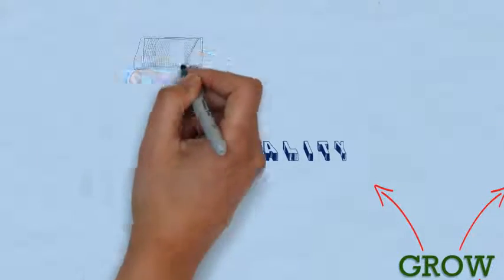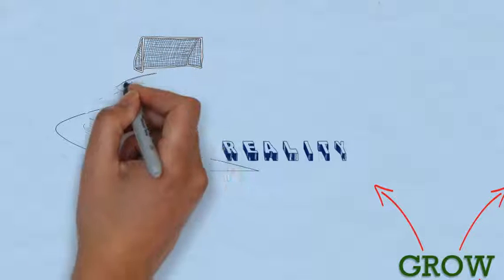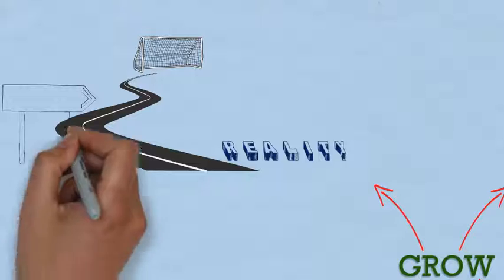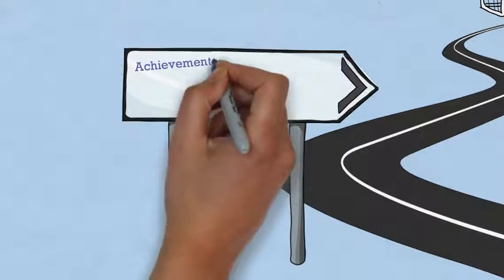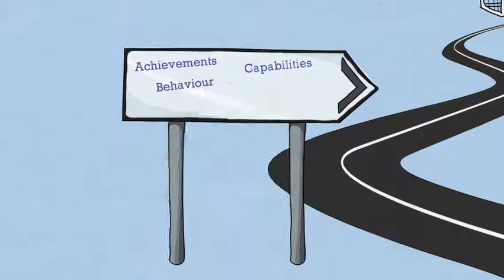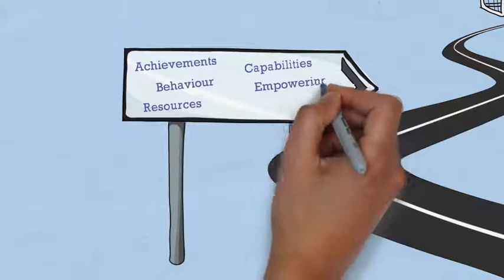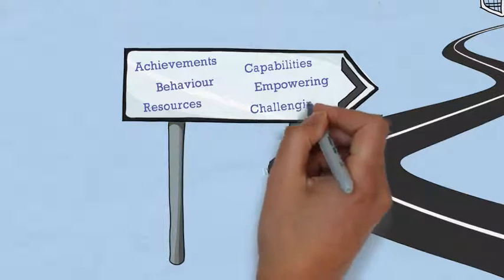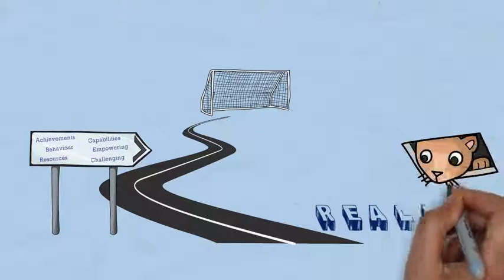Reality is the current situation in relation to the goal. This stage gives the client a starting point for moving towards their goal. It enables the client and coach to realize achievements, capabilities, behavior, available resources, and empowering beliefs and feelings, whilst challenging limiting beliefs and feelings. This assists the client to see the situation from an outside-in perspective.